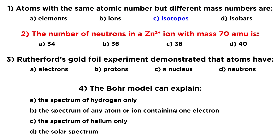For number two, the number of neutrons in a zinc 2 plus ion with mass 70 atomic mass units — this is a bit of a trick, because it doesn't matter that it's a zinc 2 plus ion. All that we care about is the number of protons and the number of neutrons. Zinc has an atomic number of 30, so in order to get to 70 atomic mass units, that means we're going to have 40 neutrons in that nucleus. So we're going to go with D, 40.